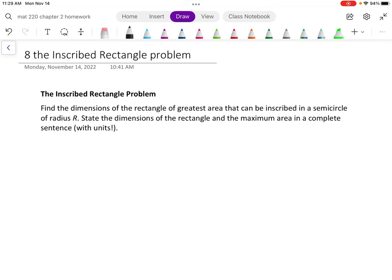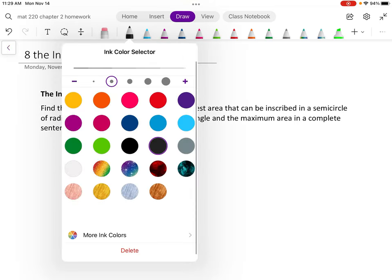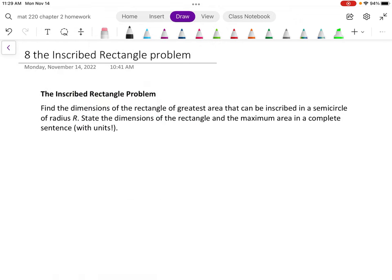We're given to find the dimensions of a rectangle of the greatest area that can be inscribed in a semicircle of radius r and state the dimensions. It's helpful here to actually envision the semicircle on a coordinate plane. So here's my coordinate plane and here's my semicircle with a radius of r. I'm going to draw on that radius and it has a length of r.